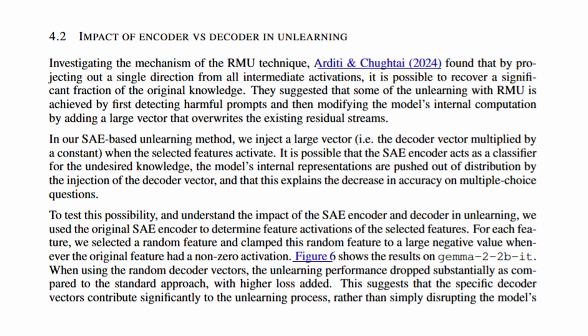The last main experiment investigates whether SAE unlearning works by actually removing biology knowledge or just by breaking the model in a sense. Previous literature found that RMU might work by first detecting harmful prompts and then adding a large magnitude vector that pushes the residual stream out of distribution, overwhelming the model rather than truly removing knowledge. Could SAEs be working the same way? In our method, the encoder detects when biology features activate, and the decoder then injects a large negative vector. This leads to the question of whether a targeted decoder direction matters, or if just the presence of a large vector accomplishes the unlearning task.